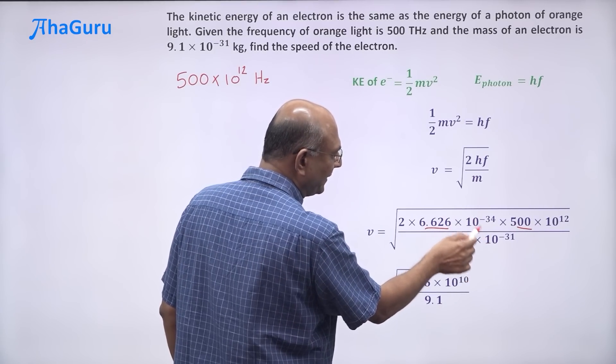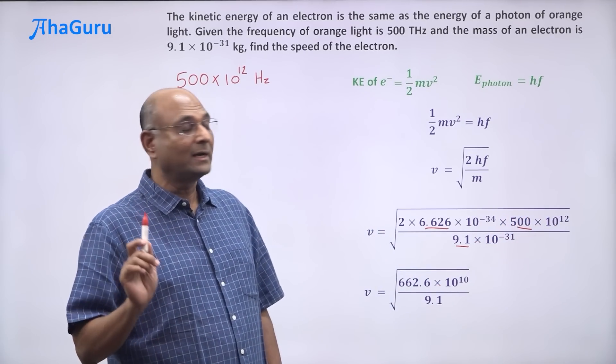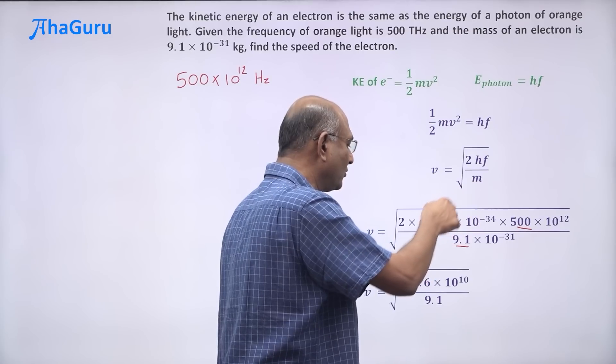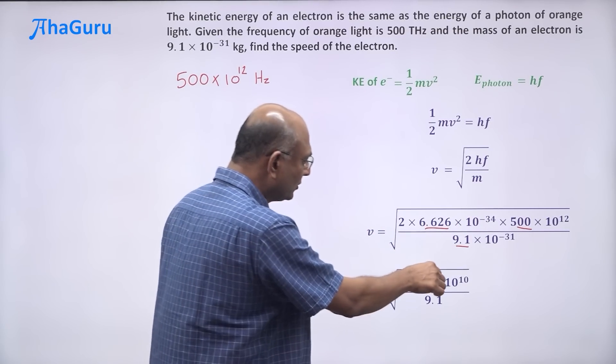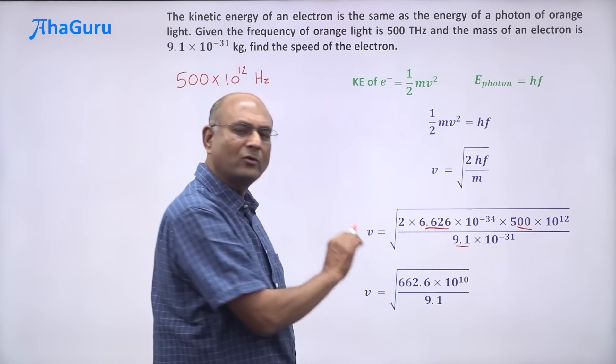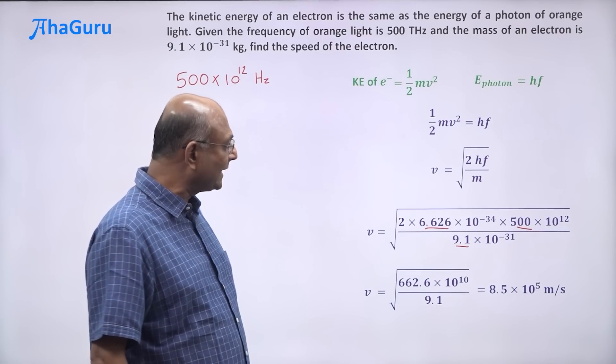Now this is 10^-3, 10^-3, 10^12, that is going to give us 10^9. 5 into 2 is 10, so 10^9 into 10, 10^10. Root of 10^10 is 10^5. This is about 72, so the root is going to be 8.5. So 8.5 × 10^5 meters per second.